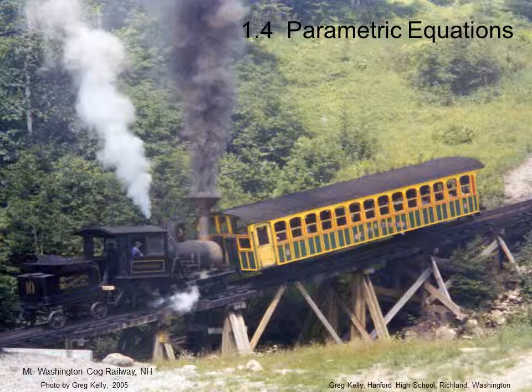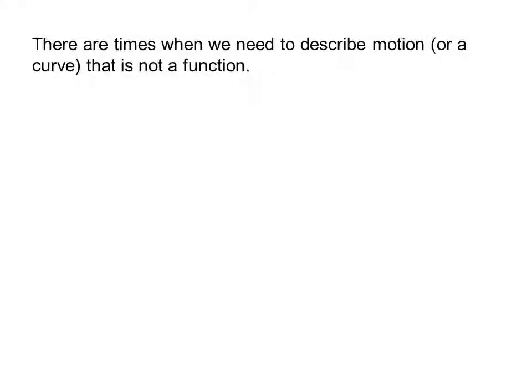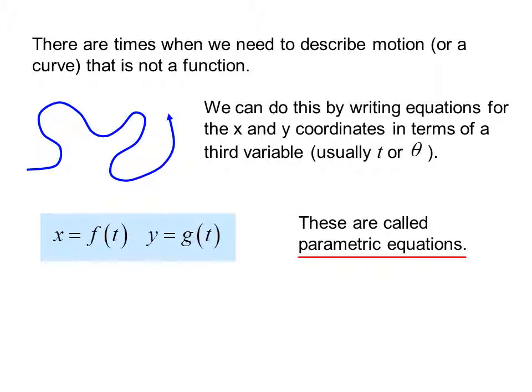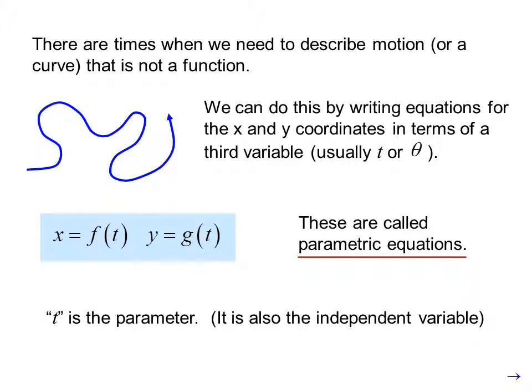Lecture 1.4 parametric equations. The photo is the Mount Washington Cog Railway in New Hampshire. This engine was over 100 years old. Most of the steam engines have been replaced by more modern engines recently which run on biodiesel. Photo is by Greg Kelly taken in 2005. There are times when we need to describe a motion or a curve that is not a function. We can do this by writing equations for the x and y coordinates in terms of a third variable, usually t or theta. We would have x equals f of t and y equals g of t.